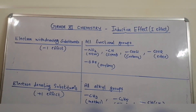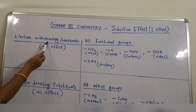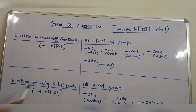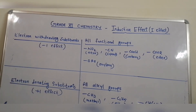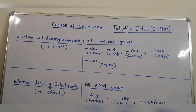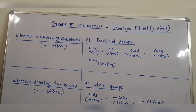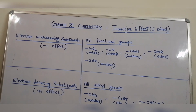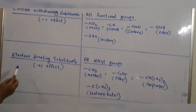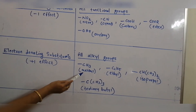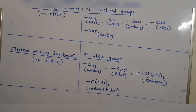Based on inductive effect, substituents are classified into electron withdrawing substituents and electron donating substituents. All functional groups are electron withdrawing substituents which show minus I effect — for example, nitro, cyano, carboxy, ester, and aryloxy. Whereas all alkyl groups show plus I effect — examples include methyl, ethyl, isopropyl, and tertiary butyl. Thank you.